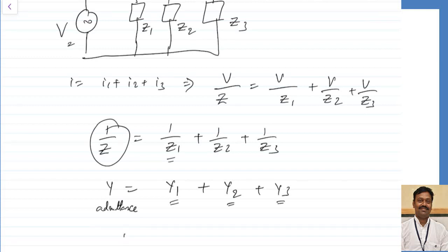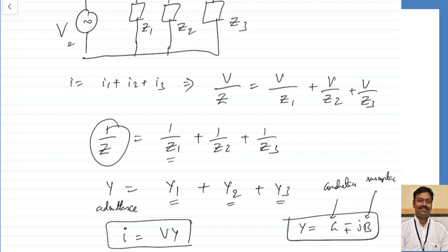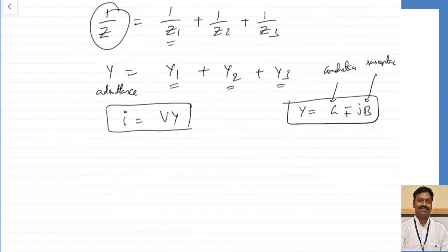The current I is V by Z or simply V into Y — just taking the product of V into Y. Practically, admittance is represented as G plus or minus J B, where G is the conductance and B is the susceptance. The minus sign comes for an inductive circuit and the plus sign for a capacitive circuit. Let us solve different circuits using this admittance technique.